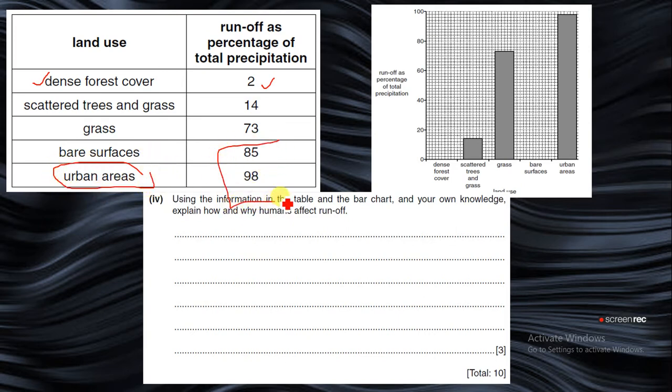The first question is to complete this graph of bare surfaces. This is runoff as a total percentage. If you want to complete that, it's 85%. We have 80 to 100, so in between you have 10, so add 5 here - that would be 90. If you're looking at 85 it will be somewhere in the middle. You have 5 in between, so counting from here: 1, 2, 3, 4, 5. Just draw your line - 85 will be somewhere here. That will give you one mark.